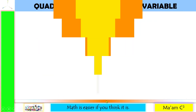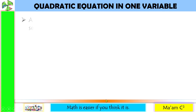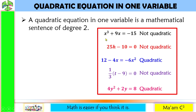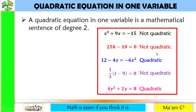A quadratic equation in one variable is a mathematical sentence of degree 2. Let us recall our activity earlier. The degree of the first equation is 3, that's why this is not quadratic. Number 2, the exponent of the variable here is 1, so this is linear, not quadratic. Number 3, the degree of this equation is 2, that's why this is quadratic.